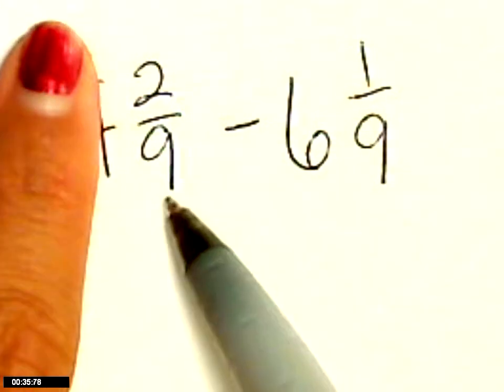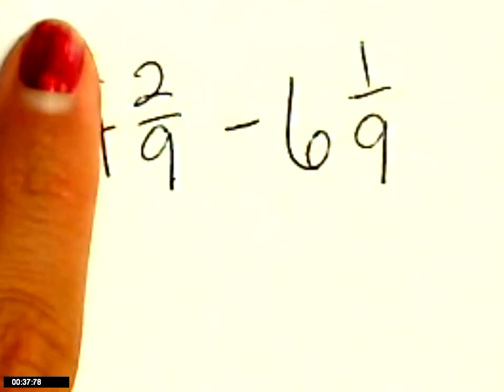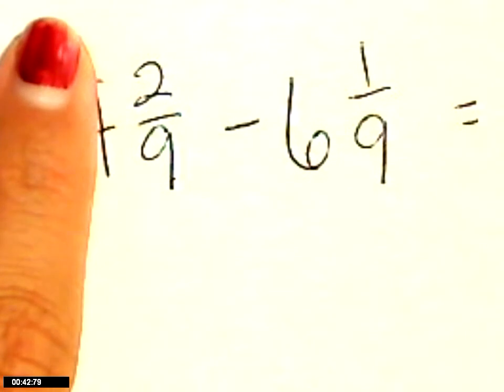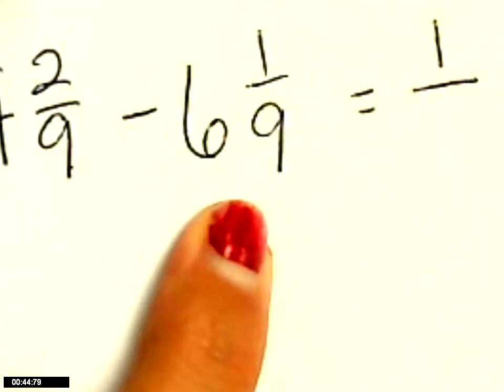I can look at my fractions, which is 2/9 and 1/9, and subtract 2 minus 1 equals 1. And what do I do with my denominator? Keep it.